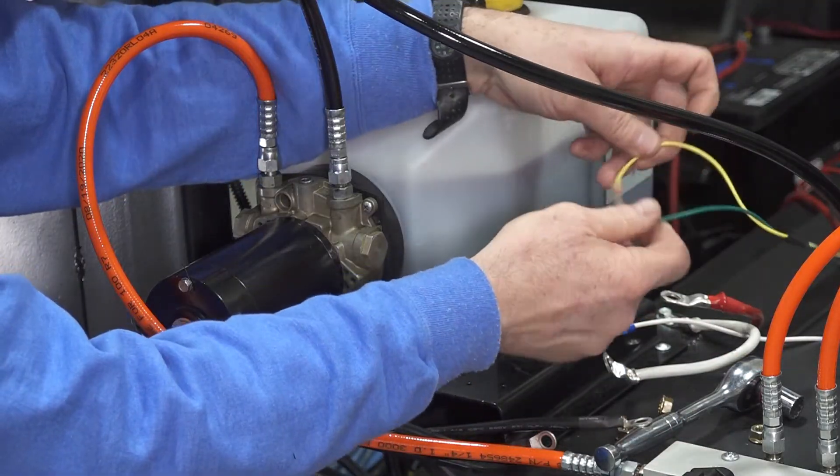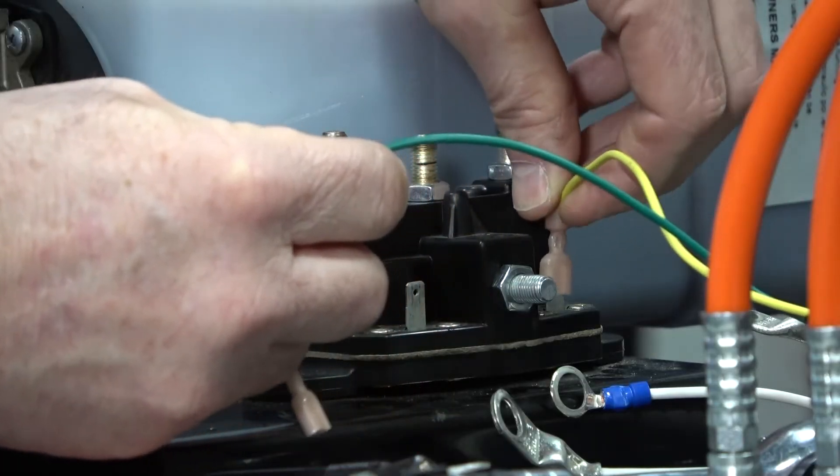Then, install the green extend wire and the yellow retract wire onto the spade terminals.